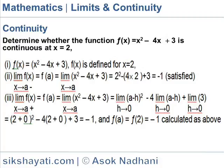(iii) lim f(x) as x→a⁺ = f(a) = lim (x² - 4x + 3) = lim (a-h)² - 4(a-h) + lim 3, where h→0